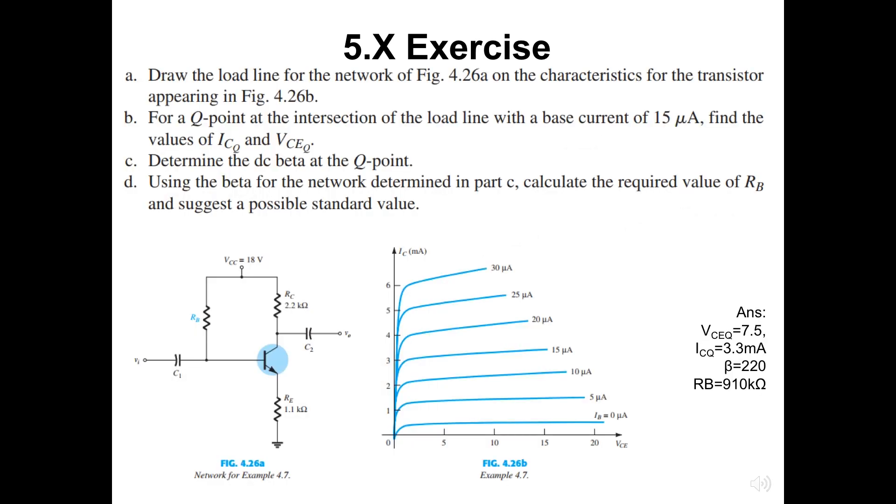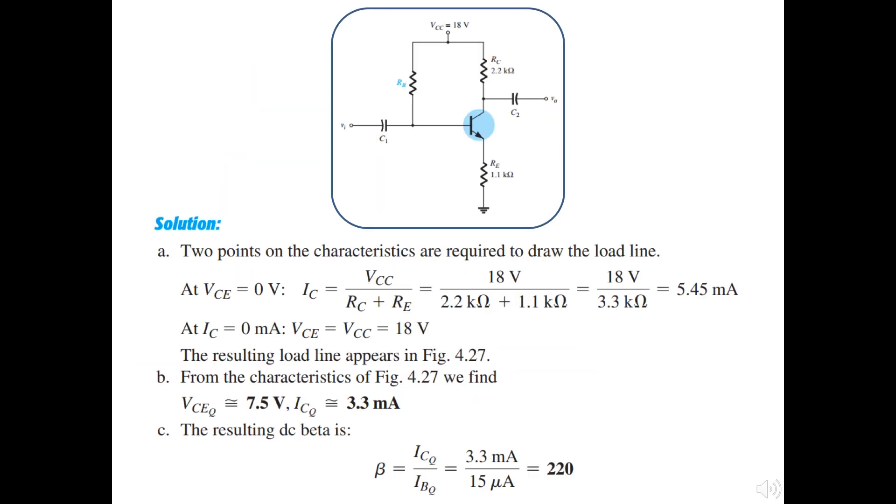Here, the exercise requires four sub-questions to be completed. The figure on the bottom left shows the network given, while the right one is the IC versus VCE curve for this network. For the first sub-question, we need to find the intercept point in both vertical and horizontal axis. Vertical axis, VCC over RC plus RE will be the point to be analyzed. IC here is equal to 5.45 milliampere. At IC is zero, we will have the VCE and VCC is 18V. This intercept point is illustrated in the next slide.